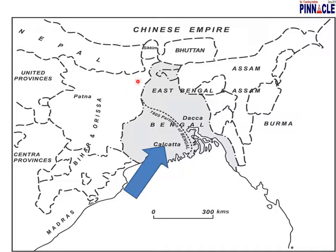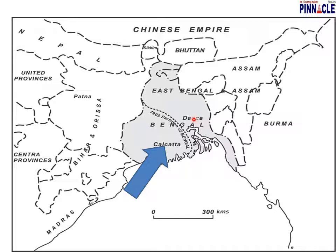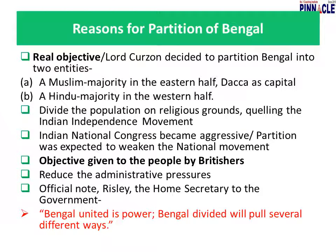Looking at the map, Bihar, Jharkhand, Orissa, Assam, and present-day Bangladesh all formed Bengal. The British proposed a partition line in 1905 dividing Bengal into two provinces. The western side would be West Bengal with a Hindu majority and its capital at Calcutta, while the eastern side would be East Bengal with a Muslim majority and its capital at Dhaka.